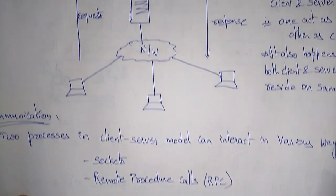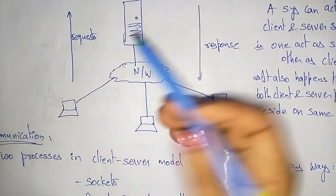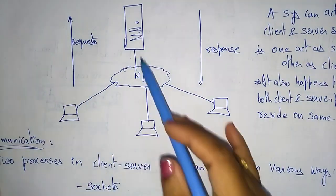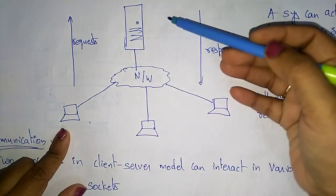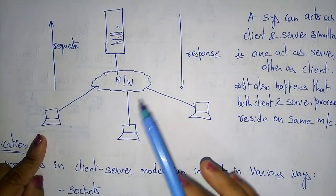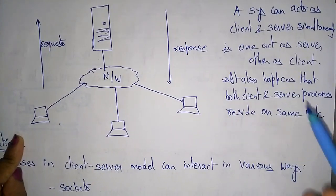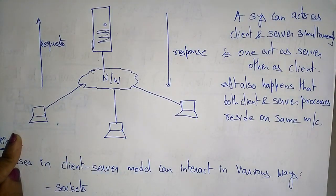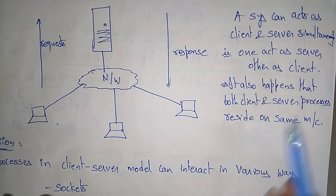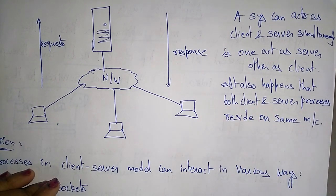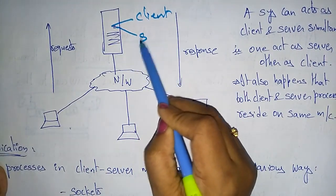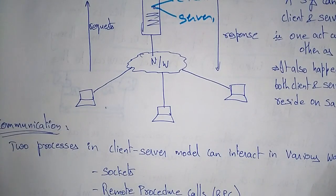It is the ability to serve requests that makes a machine a server. A system can act as a client and server simultaneously — one system acts as a server while another acts as a client, and next time their roles swap. It also happens that both client and server processes reside on the same machine.